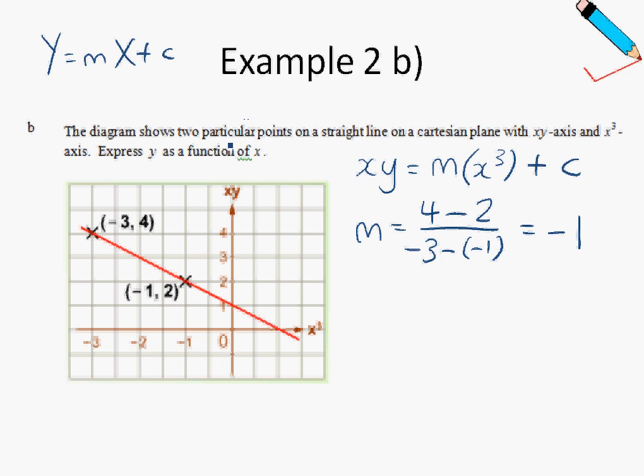So now let us find the c, or the y-intercept. So just by observation over here, my y-intercept is 1. So I'm just going to fill this into the equation that I wrote at first. So negative x cubed plus 1. And if you want to express y as a function of x, we will just divide the x over. So I'll get x squared plus 1 over x. And there we have it. That's the answer for example 2b.